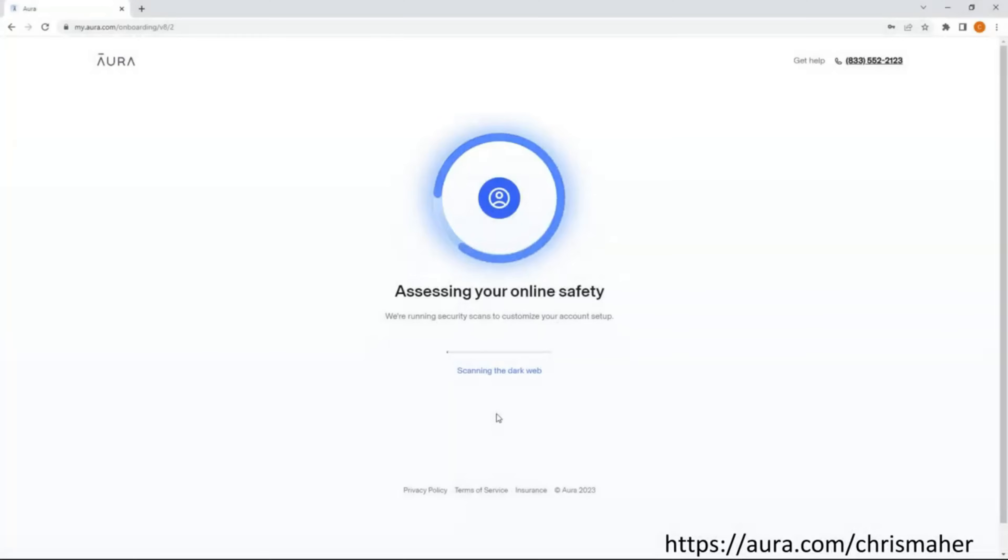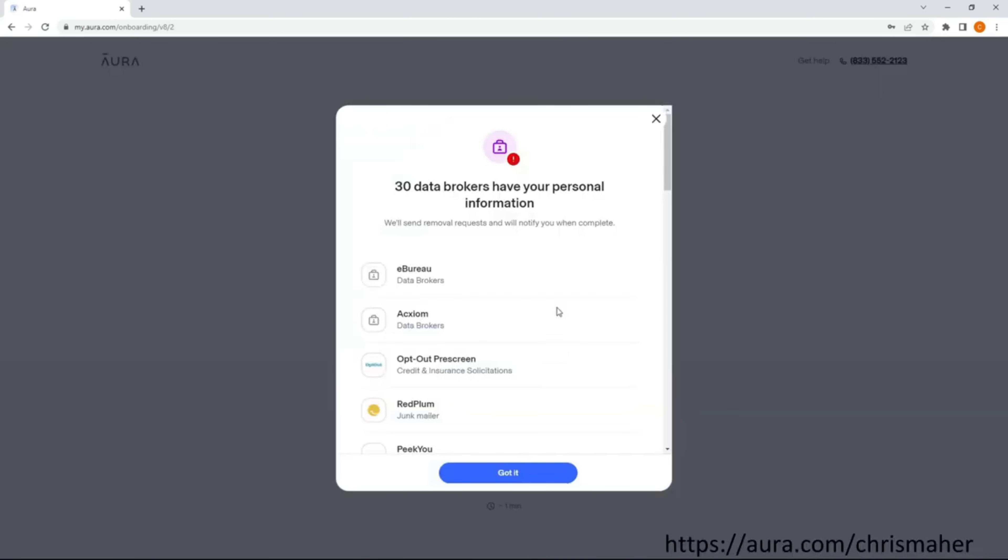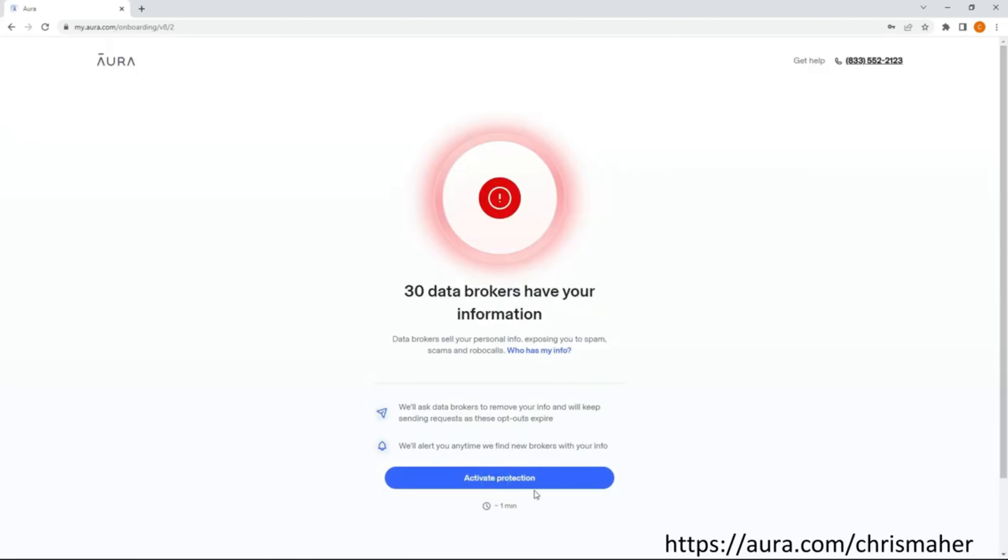Now before moving on, I want to thank the sponsor of today's video, Aura. So this is me signing up for their free 14-day trial, and during this setup process, one of the many things they do is scan the internet for data brokers that have your personal information. These data brokers then make a fortune selling your information to spammers, scammers, and other entities that want to know more about you. Now Aura was able to find 30 such instances of my personal information being in the hands of these companies.